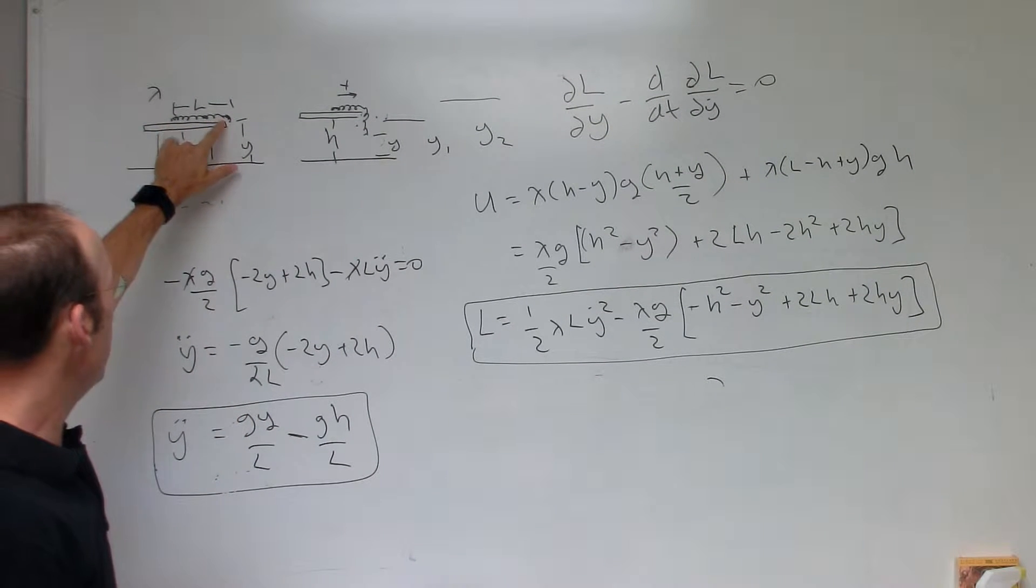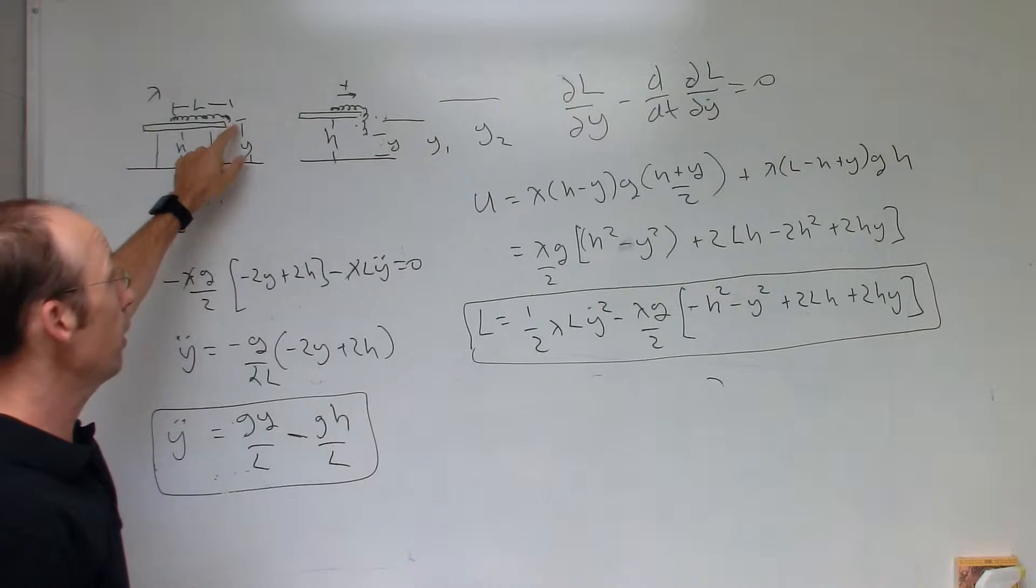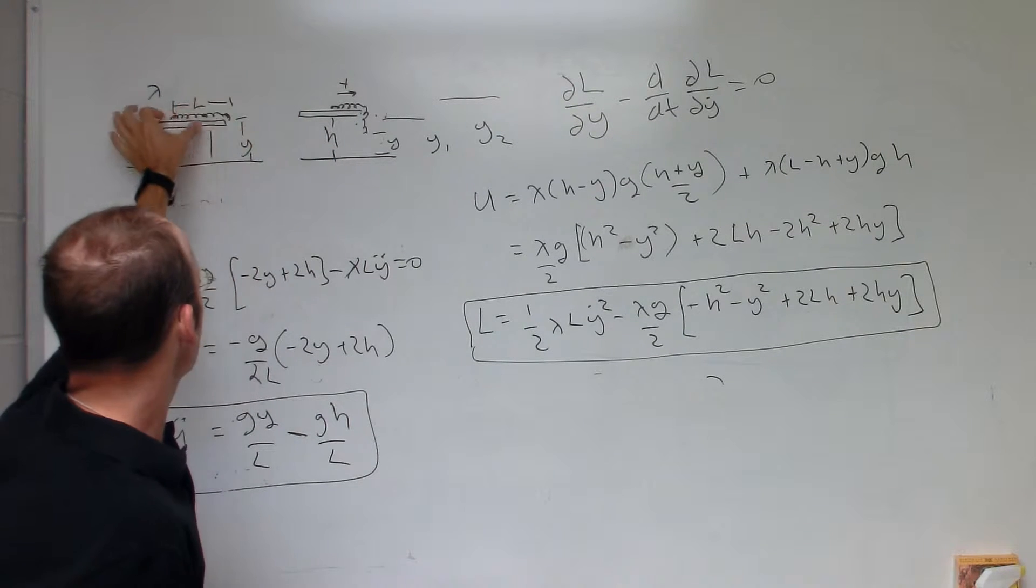So here we have a chain on a table with a tiny little piece hanging over it, and there's no friction. So of course the chain slides off.